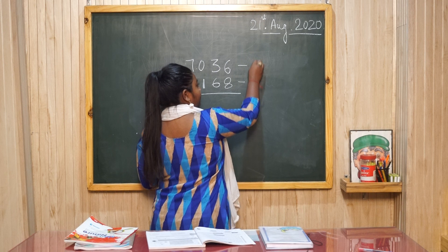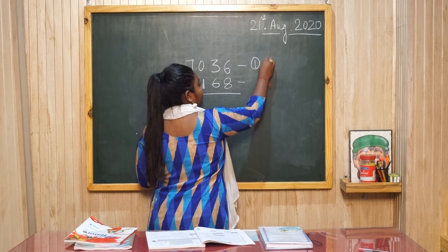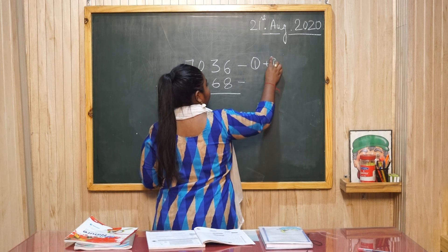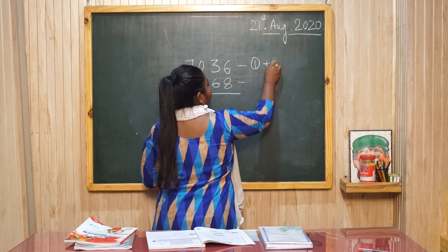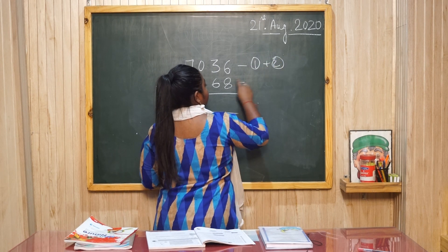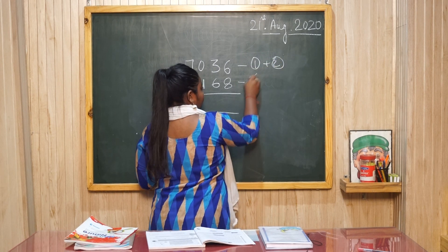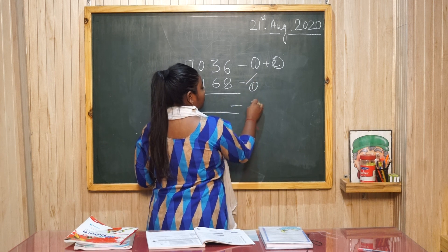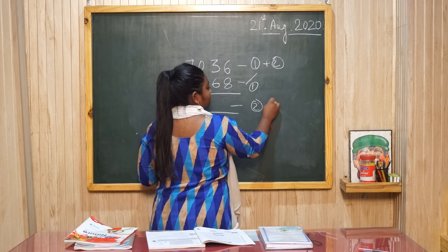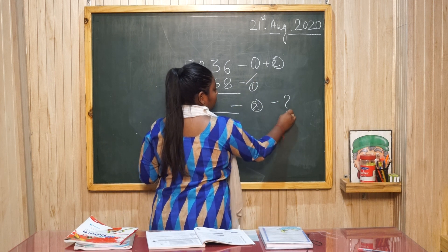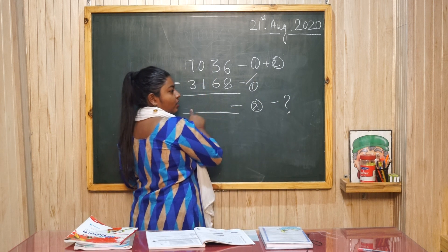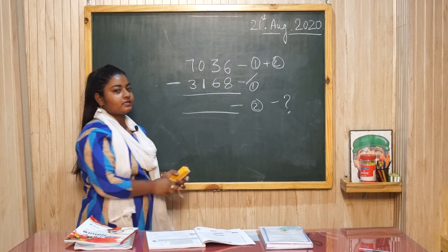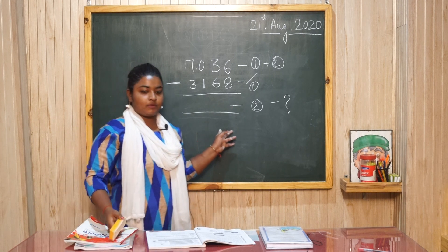यह sum 1 और 2 का है. ठीक है? इसमें से 1 का दे दिया है आपको. 2 का आपको find out करना है. जो आप deduct करके answer आएगा, वो 2 का sum होगा.